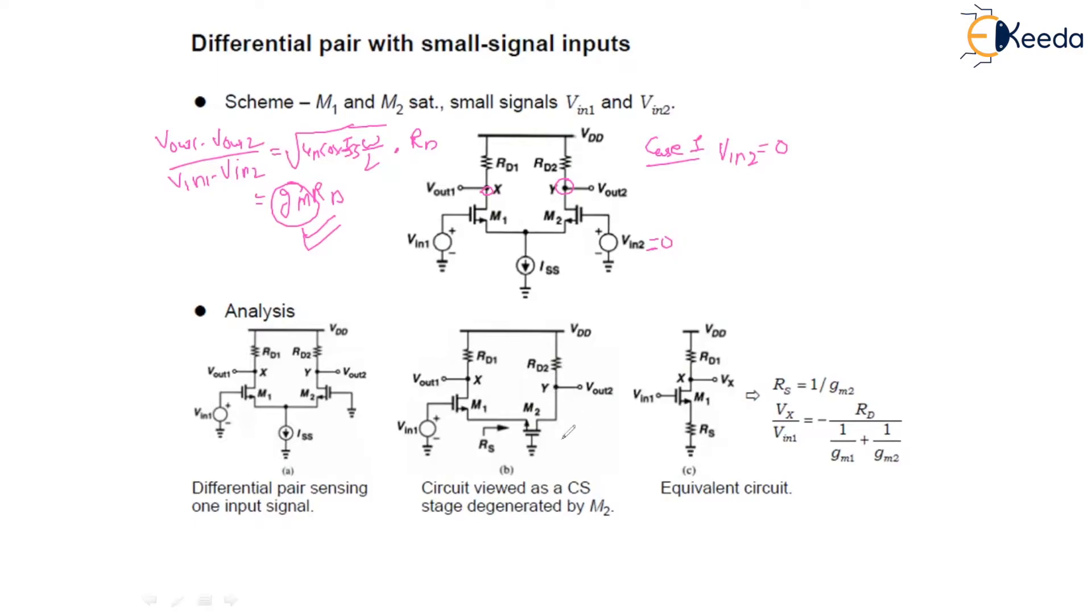Now the source resistance Rs equals 1 upon Gm2, written over here. We will neglect lambda and the body effect. So now we will make an equivalent circuit using the Thevenin rule. We can find the voltage Vx upon Vin1, which can be given as minus Rd upon the total resistance, that is 1 upon Gm1 plus 1 upon Gm2.